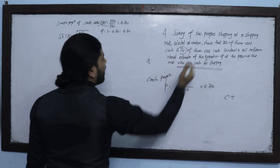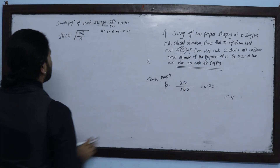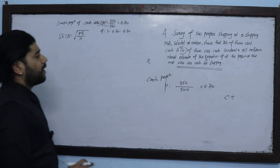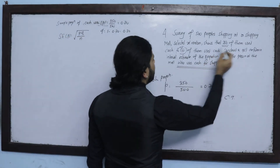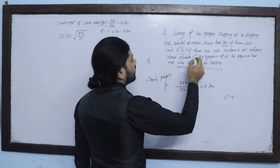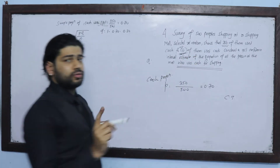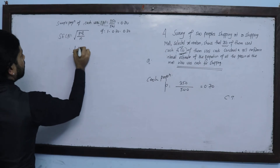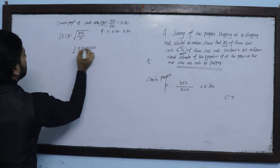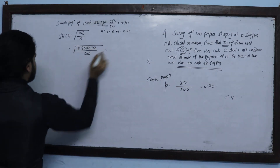150 divided by 500 equals 0.30. So Q = 0.30, and n = 500. The standard error is the square root of 0.70 times 0.30 divided by 500.